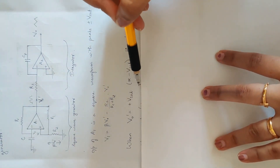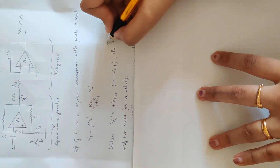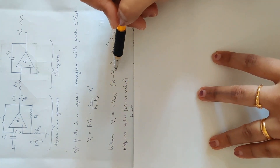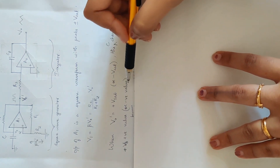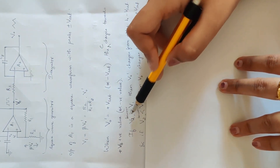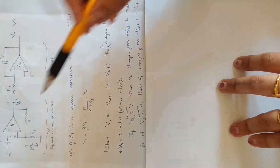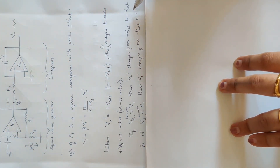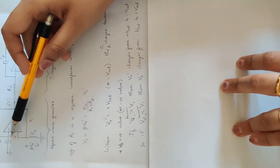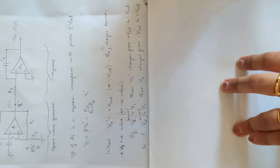When V0' is equal to plus Vsat, the capacitor charges towards a positive value. When V0' is equal to minus Vsat, the capacitor charges towards a negative value. If V0' is negative Vsat and V2 becomes greater than V1, then V0' changes from plus Vsat to minus Vsat. If V2 becomes less than V1, the output is plus Vsat.